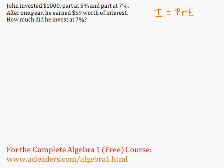In this case, he's just going to be investing for one year, so T is just one. And John invested $1,000, part at 5%, part at 7%. After one year, he earned $59 worth of interest. How much did he invest at 7%?